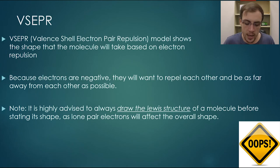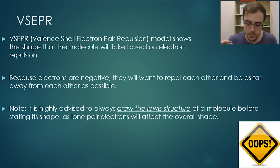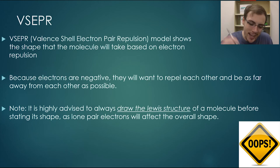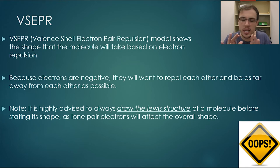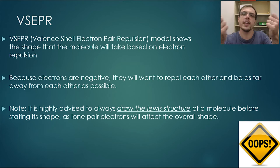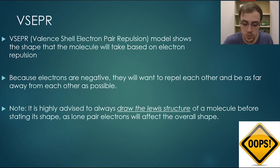Let us look at a very well-known model in chemistry: VSEPR, which represents valence shell electron pair repulsion. That is a complicated way of saying that electrons hate each other — they absolutely hate each other and do not want to be anywhere near each other. Picture getting two magnets together and putting the same pole end together: it's going to want to repel and flick itself away. That is the same sort of behavior we see in electrons.